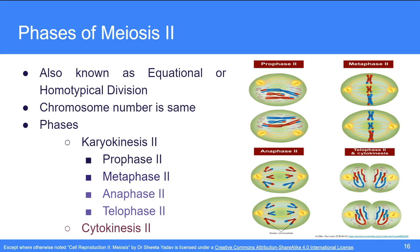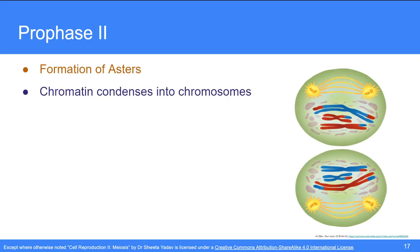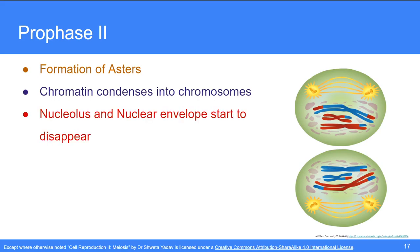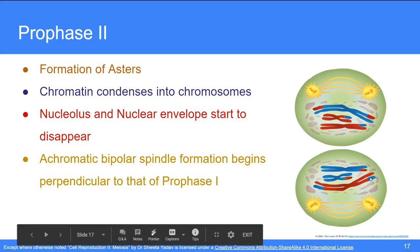Prophase 2 involves the formation of asters from centrioles. The chromatin again condenses into chromosomes, and the nucleolus and nuclear envelope start to disappear. An achromatic bipolar spindle formation begins perpendicular to that of prophase 1. Since the single cell from prophase 1 has now divided into two cells lying next to each other, the spindle formation is perpendicular — where it was vertical in prophase 1, it now occurs horizontally in both cells.